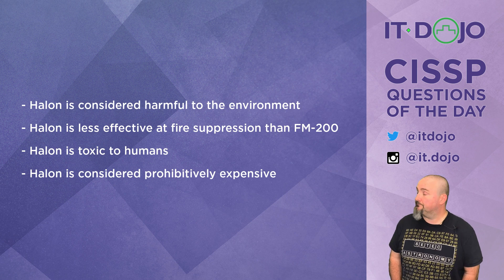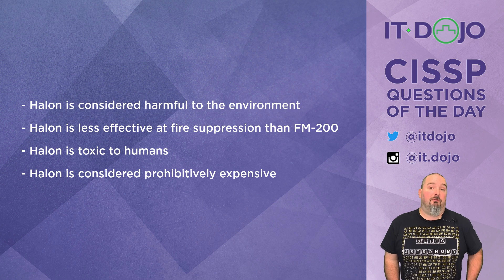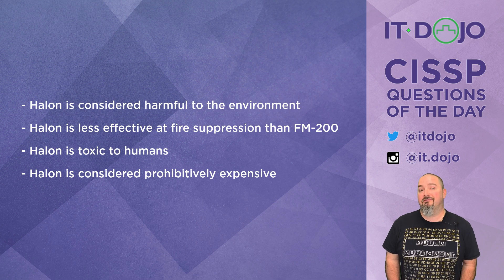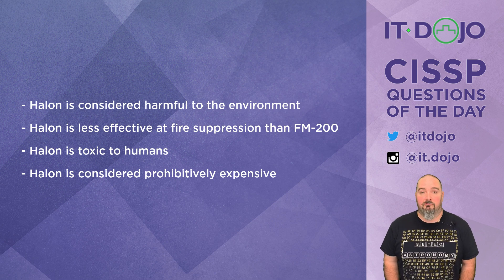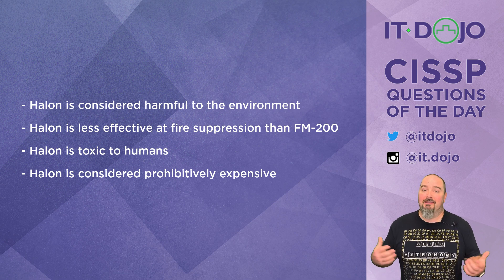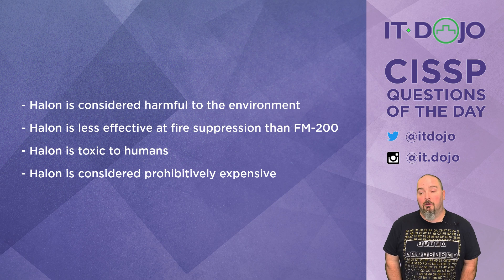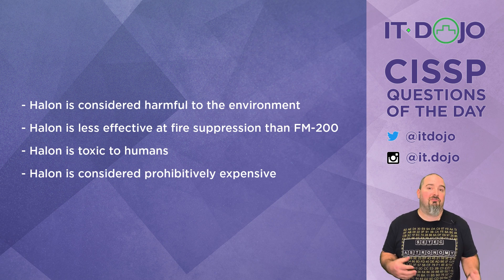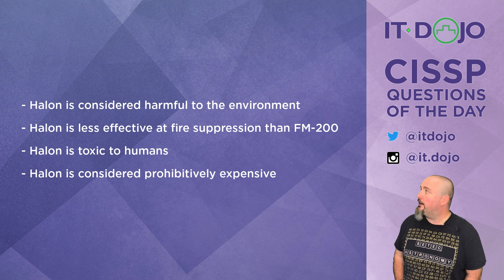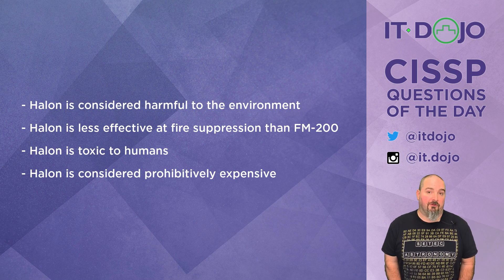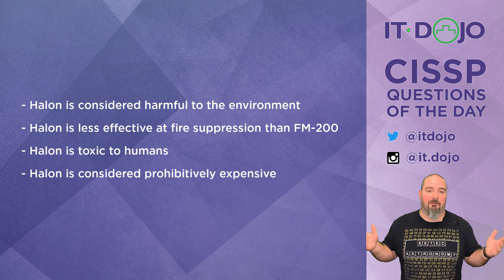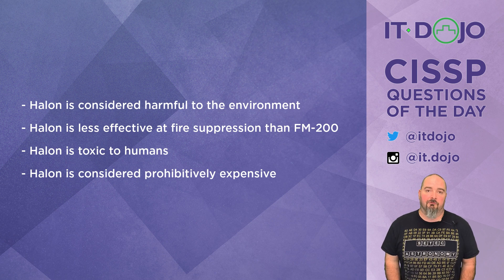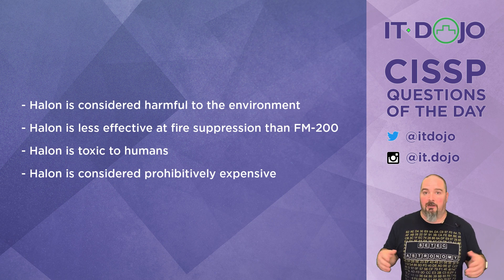This answer is very straightforward: halon is considered a danger to the ozone layer, so it's not considered environmentally friendly. Back in the late 1980s, a large number of countries agreed to ban halon and several other ozone-depleting chemicals. That makes halon-based fire suppression mostly a thing of the past — there may be some legacy systems still around, but no new halon-based systems are being deployed. That's what the Montreal Protocol was all about: saying things like halon are bad for the environment, so let's not use them.